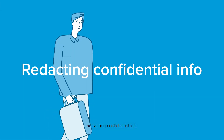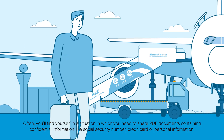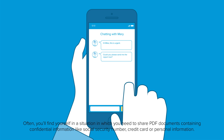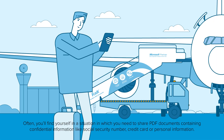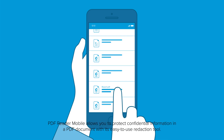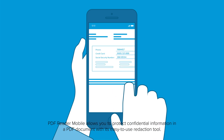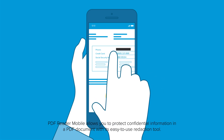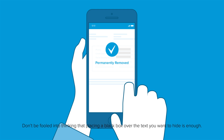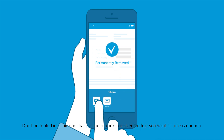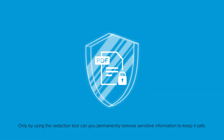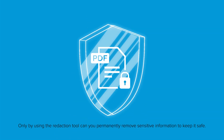Redacting confidential info. Often you'll find yourself in a situation where you need to share PDF documents containing confidential information like a social security number, credit card, or personal information. PDF Reader Mobile allows you to protect confidential information in a PDF document with its easy-to-use redaction tool. Don't be fooled into thinking that placing a black box over the text you want to hide is enough — only by using the redaction tool can you permanently remove sensitive information to keep it safe.